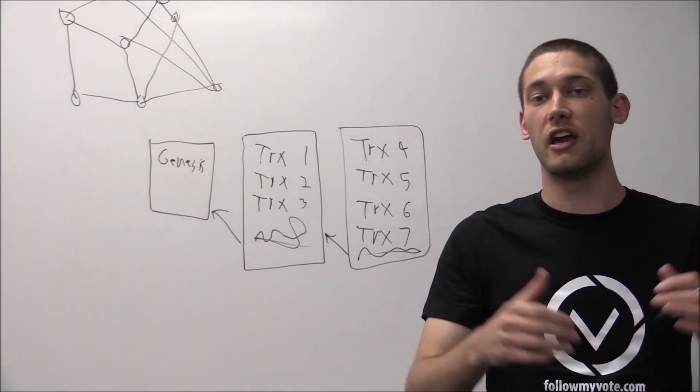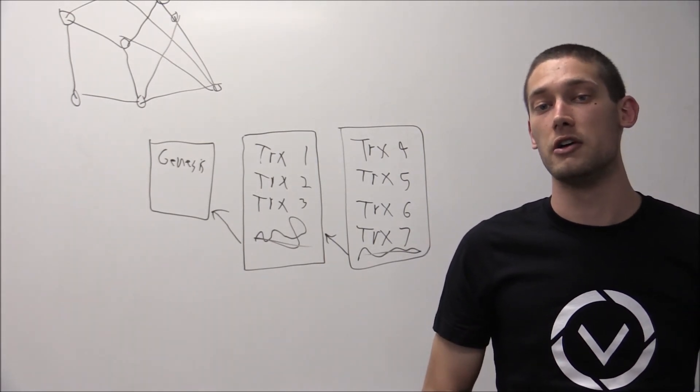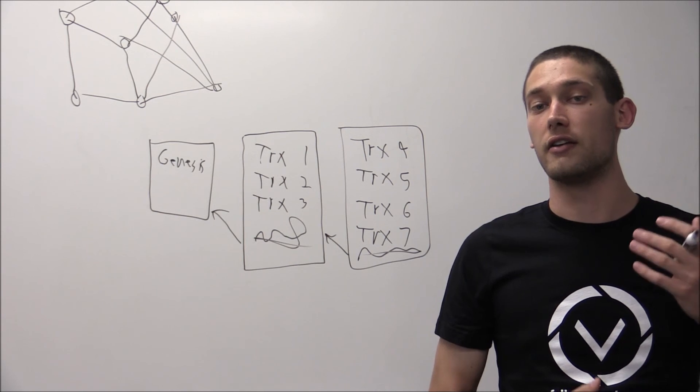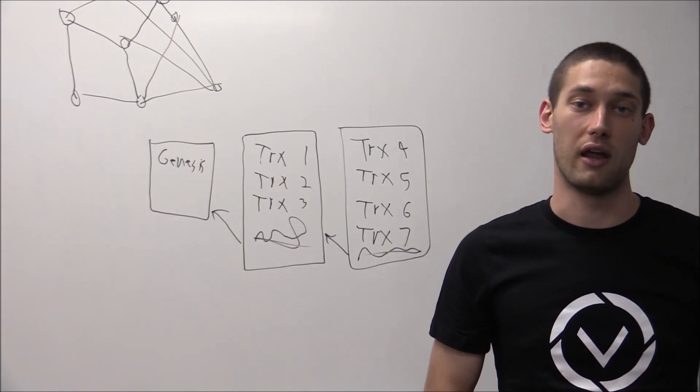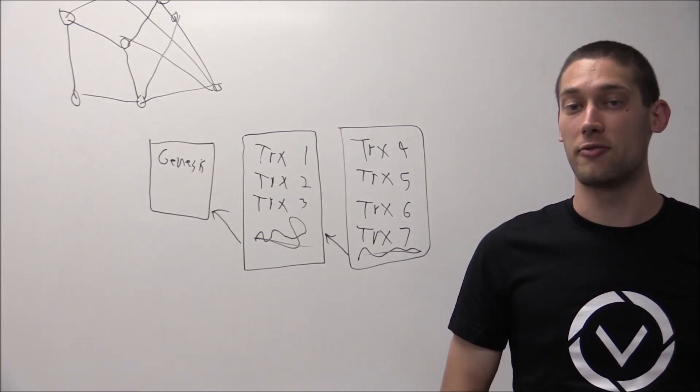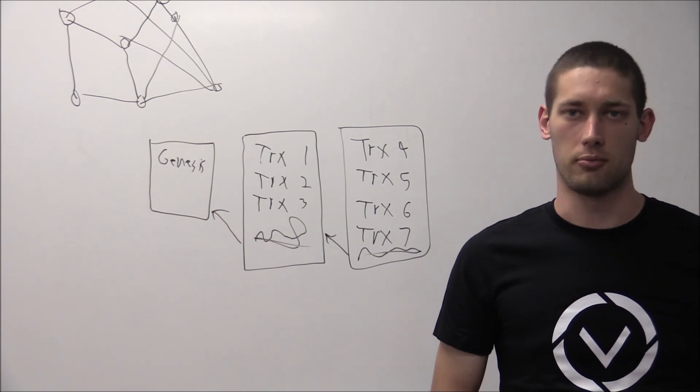And of course, people can then change their vote at the last moment based on the candidates that they think have a chance to win. So that's how you can do end-to-end verifiable voting systems on a blockchain.